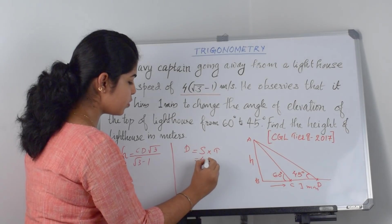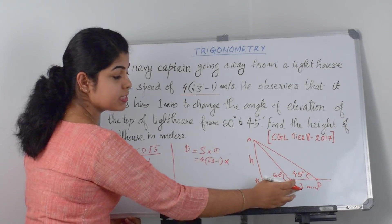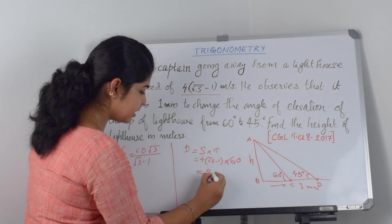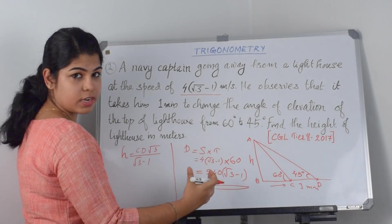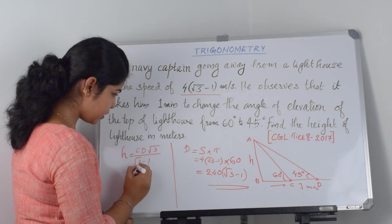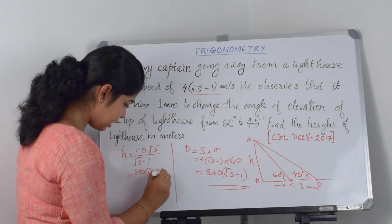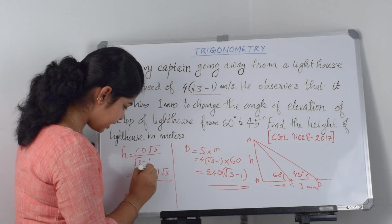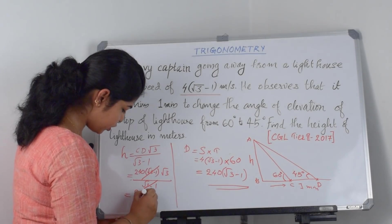So the distance is 4 times root 3 minus 1 multiplied by the time. Time is 1 minute, that is 60 seconds. So the distance CD is 240 times root 3 minus 1. Substituting into the formula: h equals 240 times root 3 minus 1 times root 3, all divided by root 3 minus 1. We can cancel root 3 minus 1 in the numerator and denominator, so the final answer is 240 root 3.